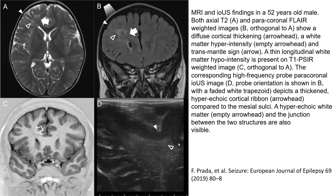This is also the echo image obtained from intraoperative ultrasound. As in image D, we see the hyperechoic white matter, and the junction between the two structures is also visible.